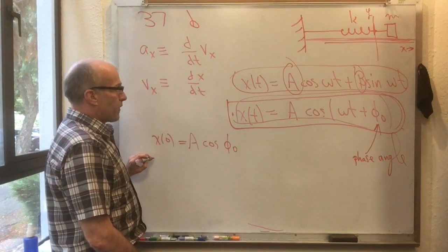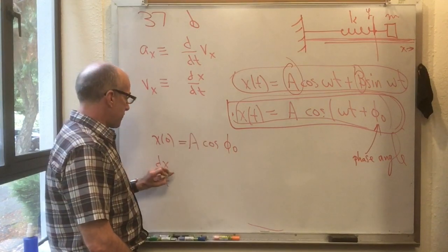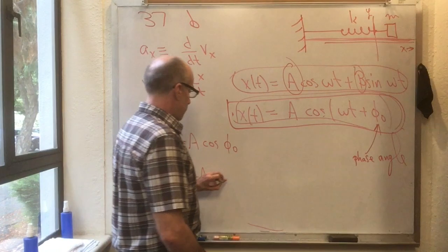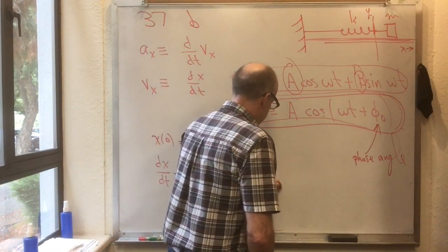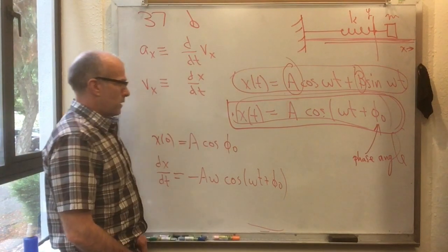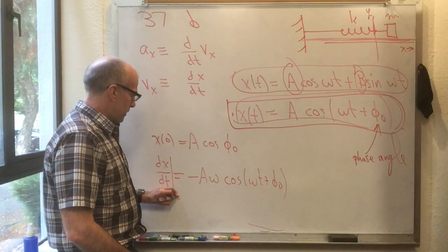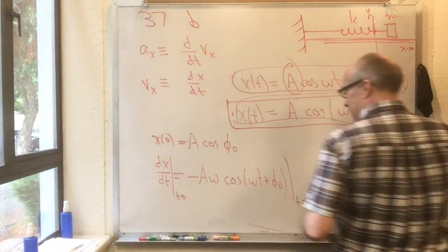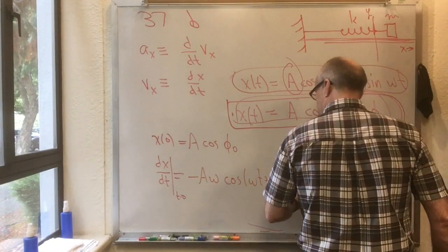And if I take dx dt, differentiate that thing, I get minus A omega times cosine omega t plus phi naught. Now, I can plug x of zero into this and see what I get. And I get minus A omega cos phi naught.